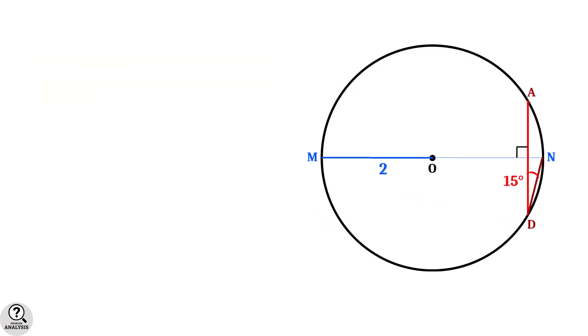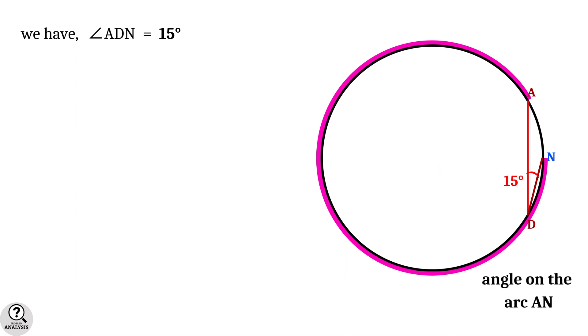Coming back to the problem, we have angle ADN equal to 15 degrees. Now observe the major arc AN of the circle. So angle ADN is an angle on this arc.